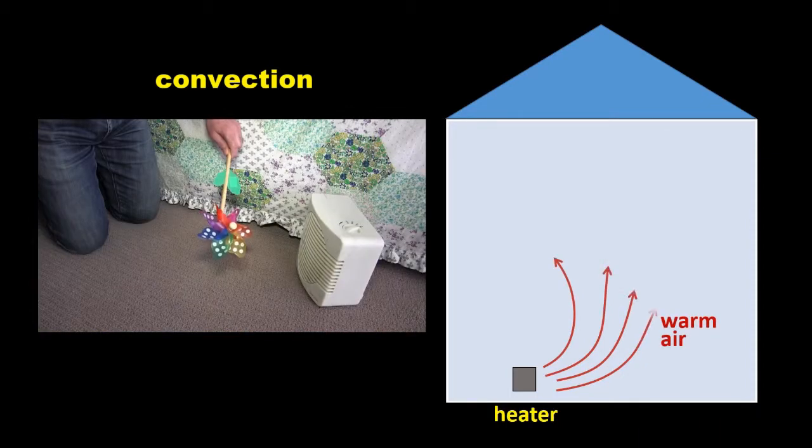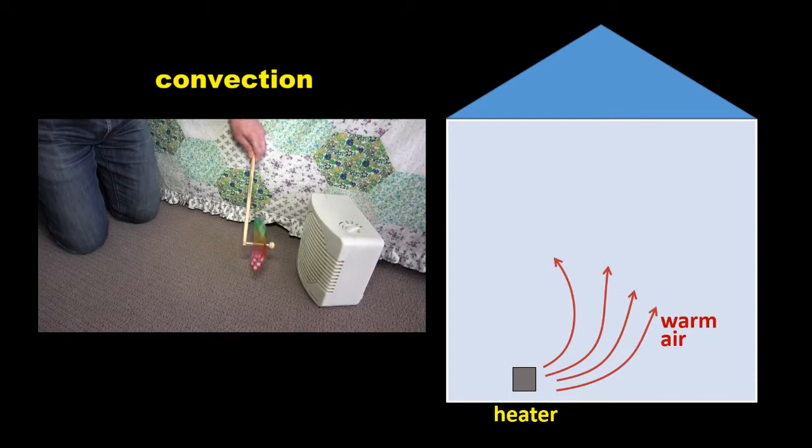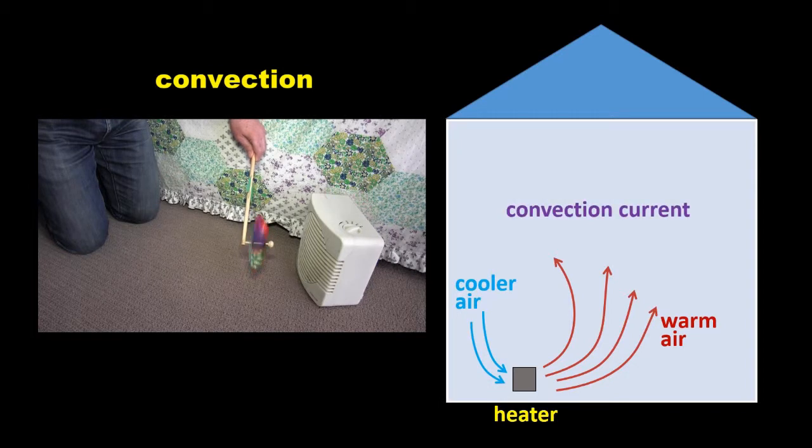The warm air warms up whatever's in the room and loses some of its warmth in the process. It then returns back to the heater and is reheated and the cycle repeats. The air current carrying the warm air is called a convection current.